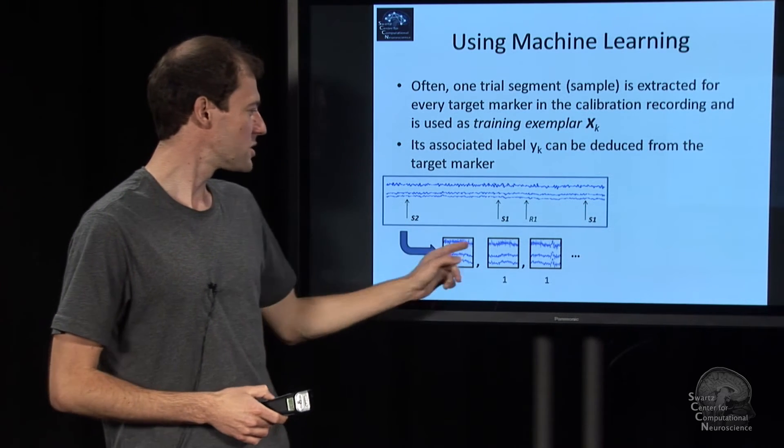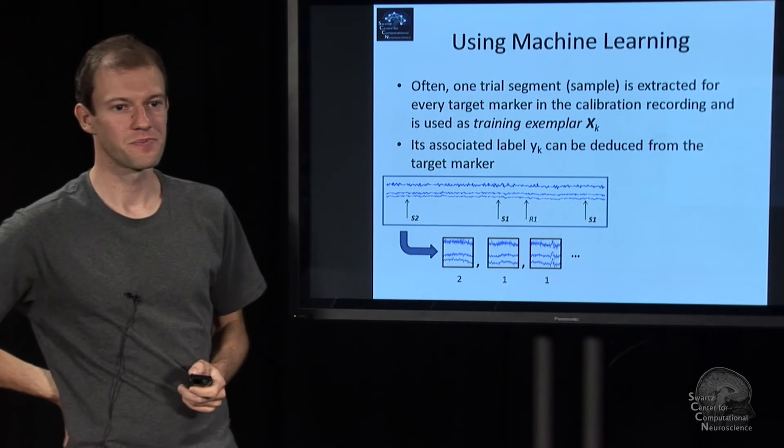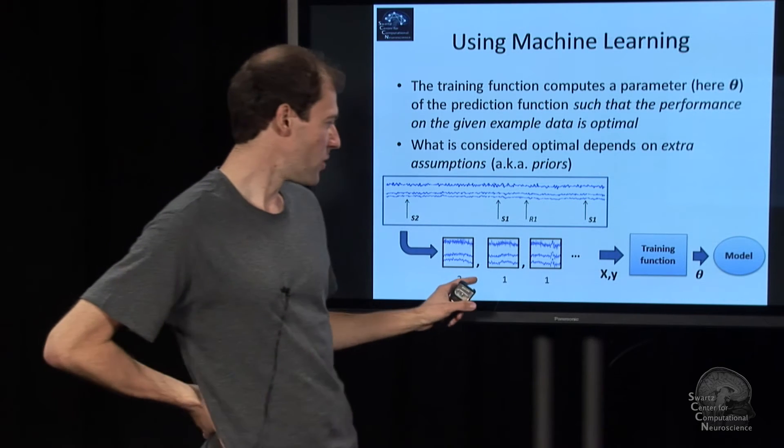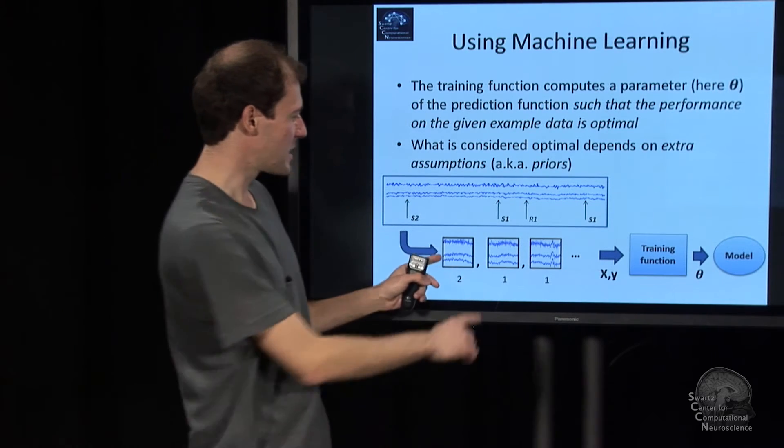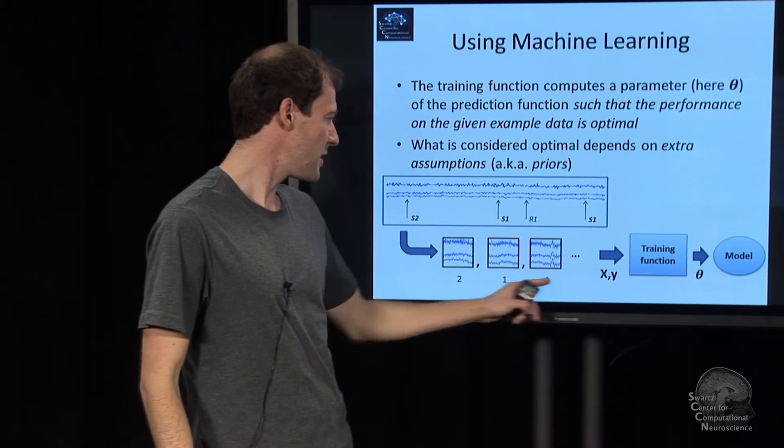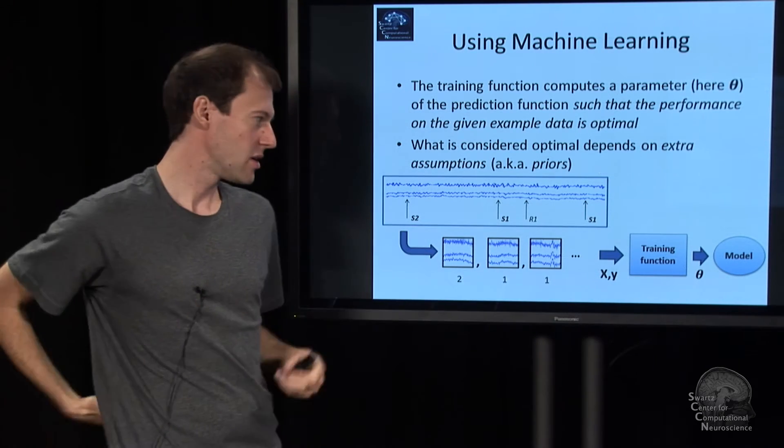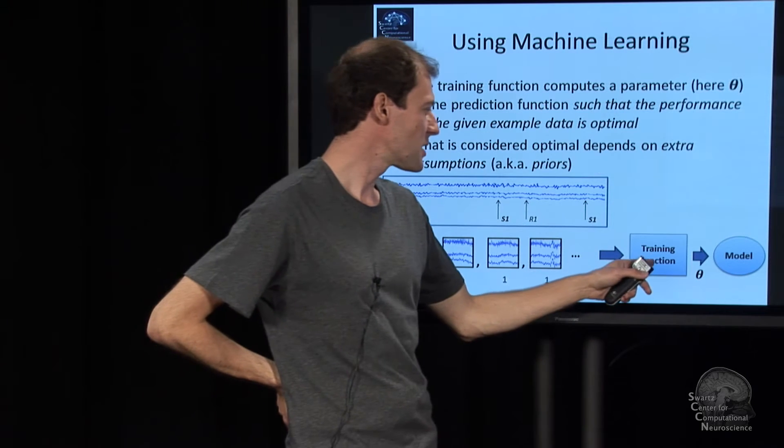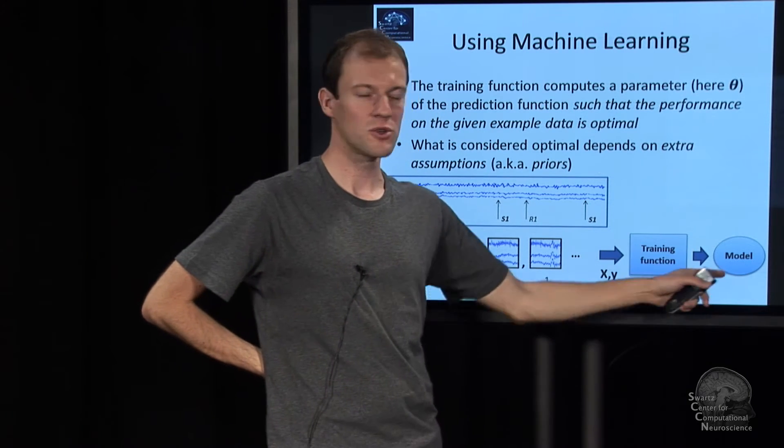And so we can sort of concatenate all this into a data matrix, multiple observations, and all the labels into a label vector, also across all observations, stick it into the training function, get our model parameters, and get our model.